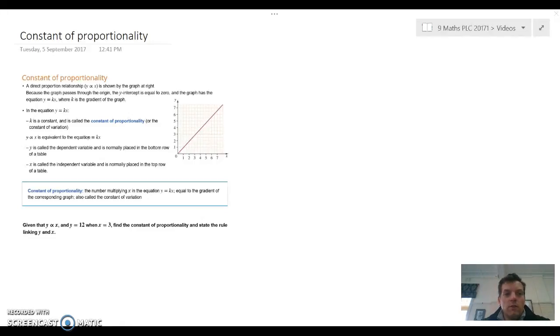In today's lesson, we're looking at constant of proportionality. So when we have a direct relationship, as we can see in the graph here, we can see that y and x are in direct proportion to each other. Now, we know that because we can see that they go through 0 and the relationship is linear.